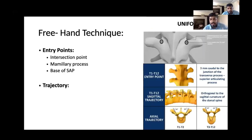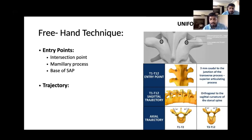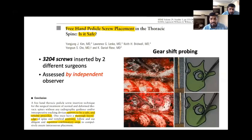This is the most important image for all of us — the entry point, the sagittal trajectory and the axial trajectory in deformities. The superior articulating process and transverse process junction is our entry point for thoracic screws. At times we need to remove the superarticular process by doing osteotomy to get clearance. The gearshift technique is very useful. Trajectories are orthogonal to the sagittal curvature. For T1 and T2, axial trajectories are 10 degrees more at 30 degrees, and T3 to T12 is 20 degrees convergence.